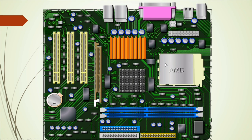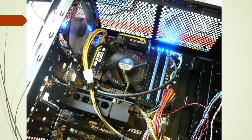Here we have other ICs on the board. This is the computer motherboard in general. Now let's pass to the next slide. Here we have a real motherboard or real central unit. We have the fan — this is the processor and this is the fan for the processor.